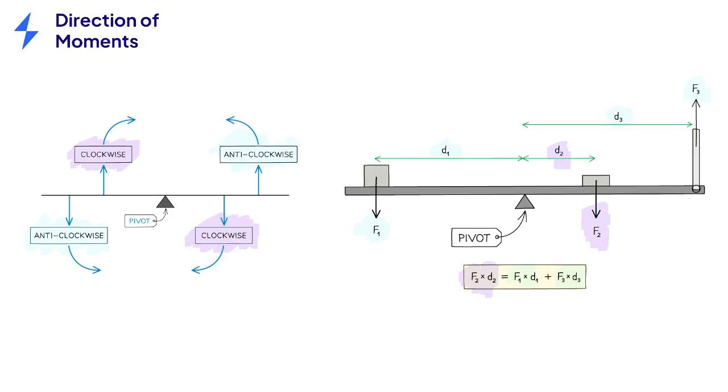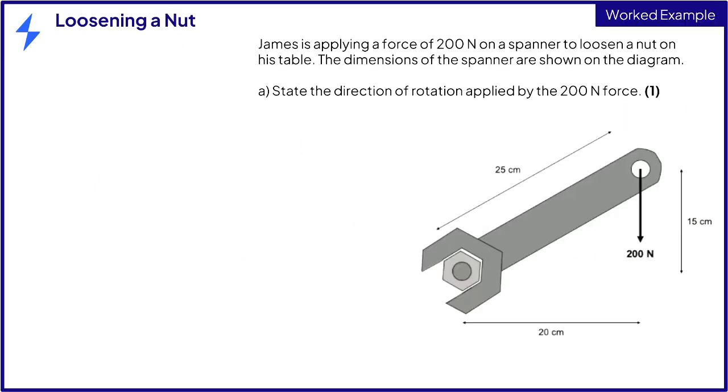In the diagram, force 2 times distance 2 is equal to force 1 times distance 1 plus force 3 times distance 3.